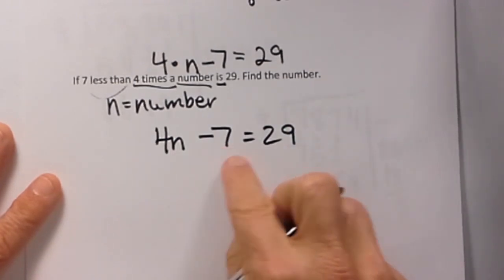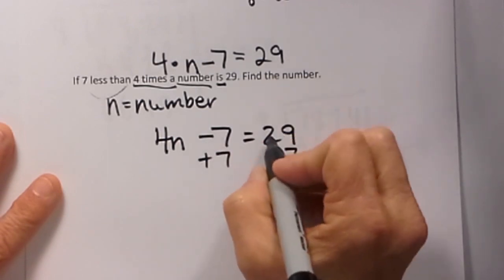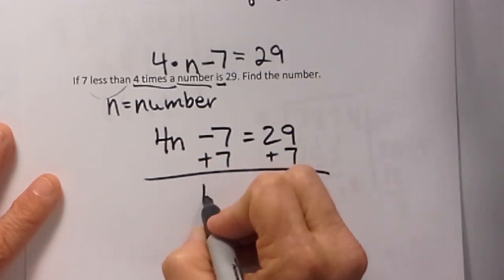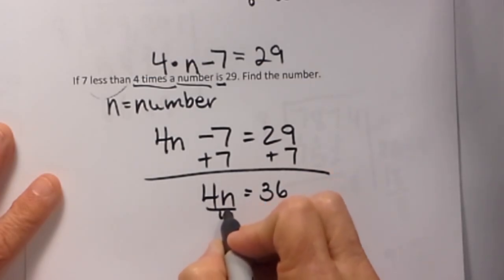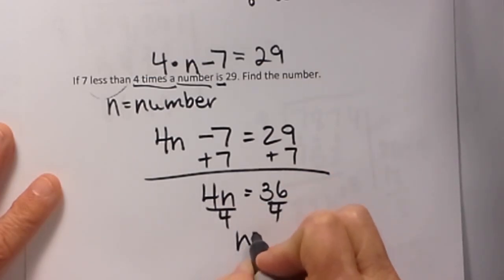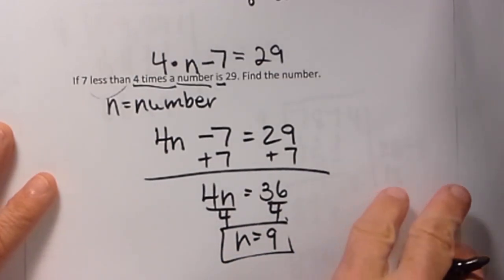Now let's solve for n. Let's add 7 to both sides so we can get our constants together. That gives us 4n is equal to 36. Divide both sides by 4 and n is 9. So our number is 9 and that is our answer to this one.